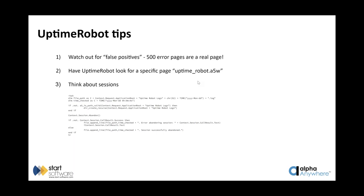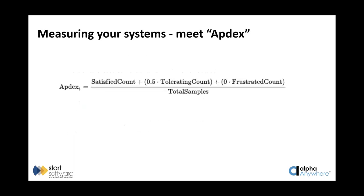If you configure Uptime Robot correctly, you'll know before your users call you that your system has a problem — really handy. An interesting side benefit: monitoring has shown us just how reliable Alpha Cloud is. Our Alpha Cloud–deployed applications are phenomenally reliable; we just don't get problems with them.